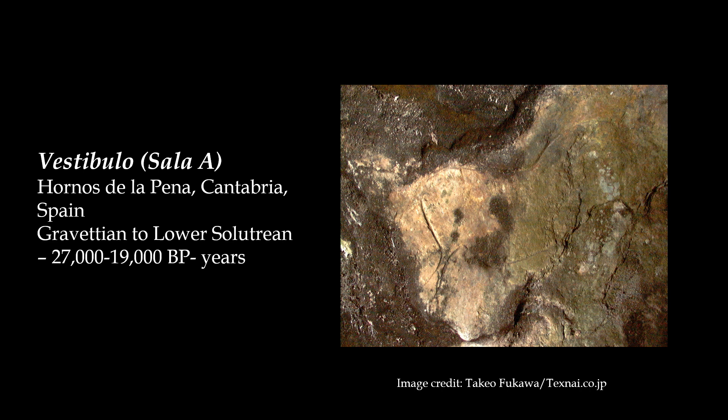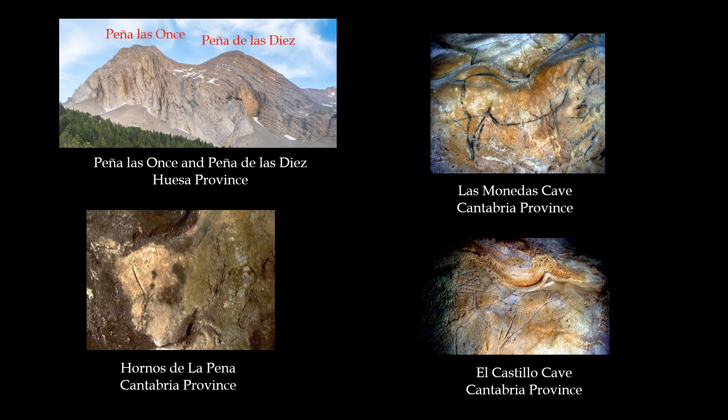We all need to have the same visual information. The images can be accessed at www.texnai.co.jp. We may find some answers for these three depicted headless mares in Peña Las Onces and Peña de las Diaz in the Huesa province. Note the dropped back and heavy belly between the mountains. The narrow vertical lines have the appearance of legs. The late stage pregnant condition on the panel suggests a late winter to early spring time period. Ice Age artists over a 15,000-year period appear to have been designating time and place, but more examples are required to develop a hypothesis.